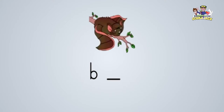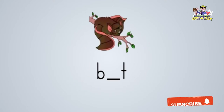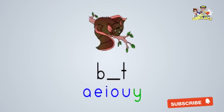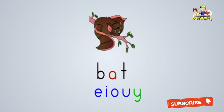This is a bat. Can you say bat? What is the missing vowel? Yes, that's right. The missing vowel is A. Great job.